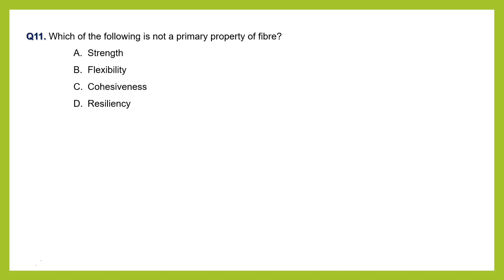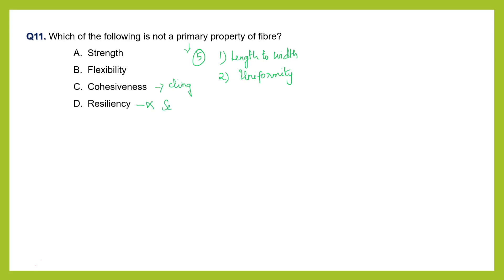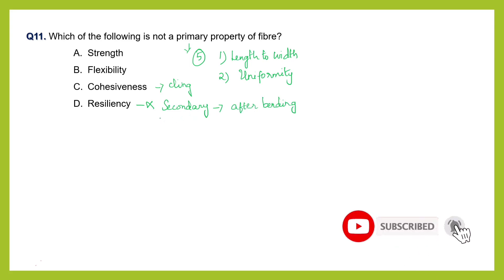Question number 11: which of the following is NOT a primary property of fiber? Strength, flexibility, cohesiveness, or resiliency? There are five primary properties: high length-to-width ratio, good uniformity, strength, flexibility, and cohesiveness - the ability of fibers to cling to each other. Resiliency is the only secondary property here - it is the ability of a fiber to regain its original shape after bending. So the answer is D: resiliency is not a primary property of fiber.